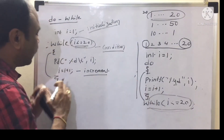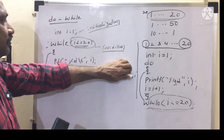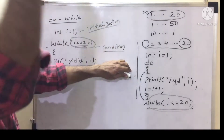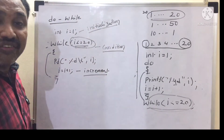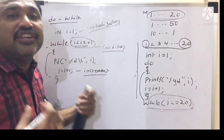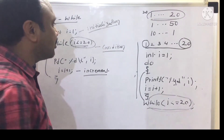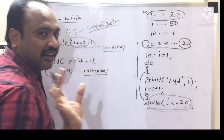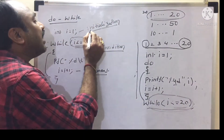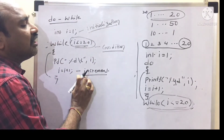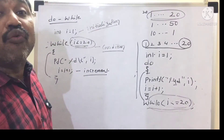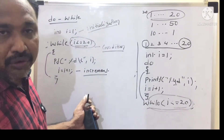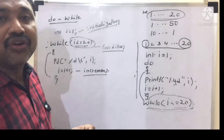Suppose if we forget i = i + 1: i value remains 1, condition 1 < 20 is always true, 1 is printed infinitely — an infinite loop. It is the tendency of humans to forget things. In the syntax of while and do-while, condition is part of the syntax so we rarely forget it, but we might forget initialization or increment/decrement, leading to unexpected results.